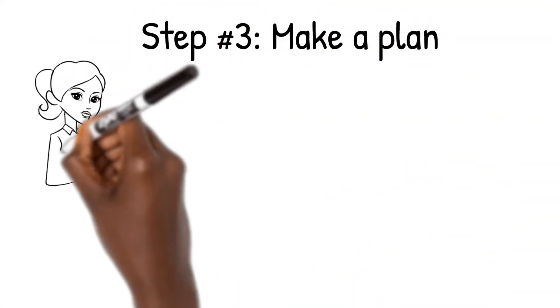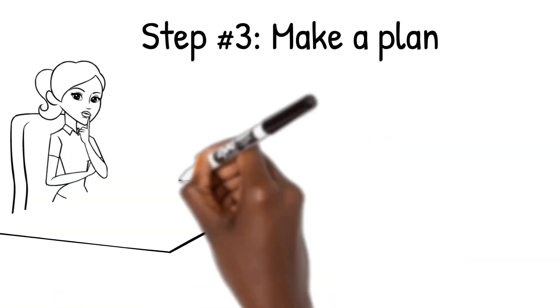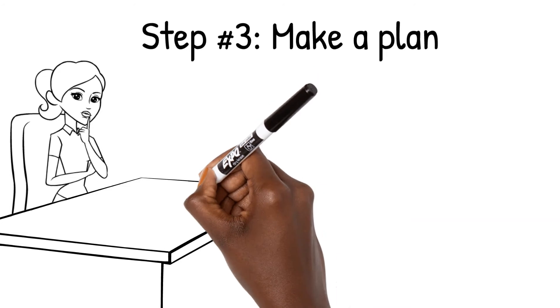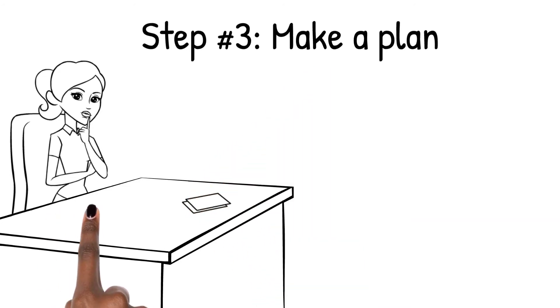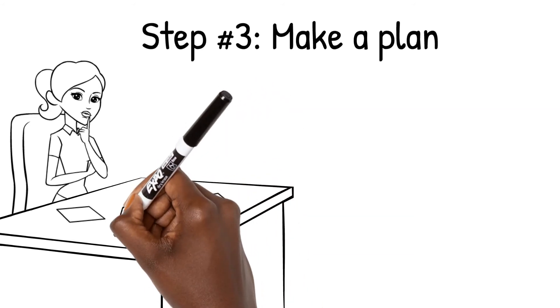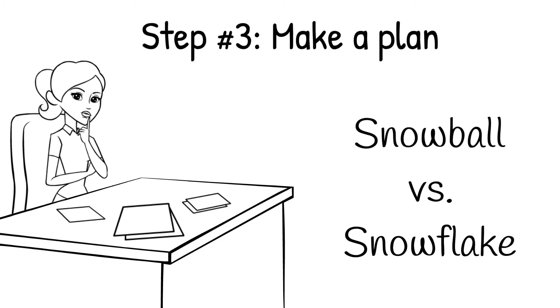Step 3. Make a plan. Once you have prioritized your debt, start weighing your realistic options. You may want to consider using some traditional plans. One option would be the snowball strategy, where you pay your smaller balances first. Another option would be the snowflake strategy, where you pay the debt with the higher interest rates first.